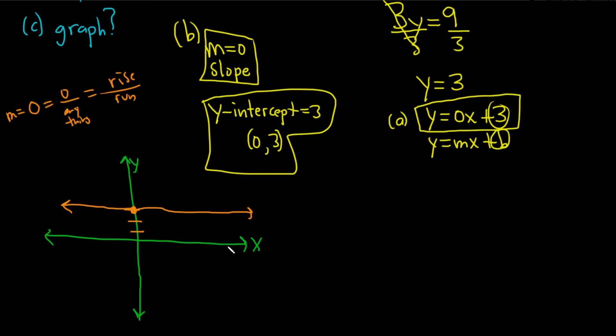Another way to do it is to realize that whenever it's y equals a number, like y equals any number, it's always going to be a horizontal line. You see, when y is equal to 3, x can be any number. So like if x is 1, y is 3. If x is 2, y is 3. It doesn't matter what x value I pick, y is always 3.